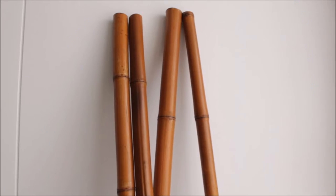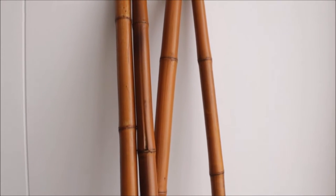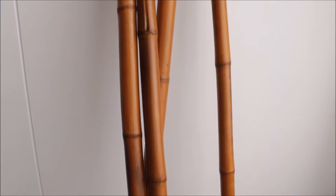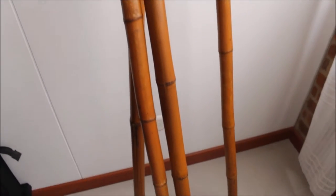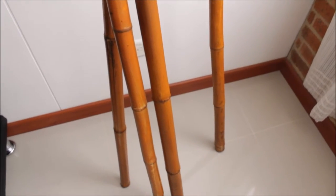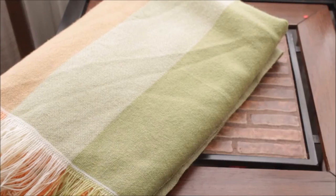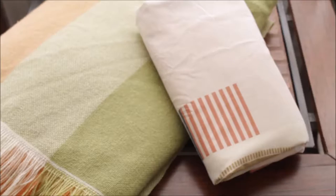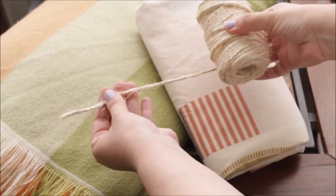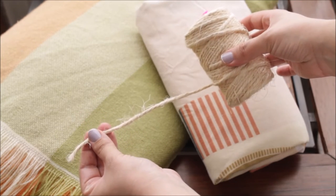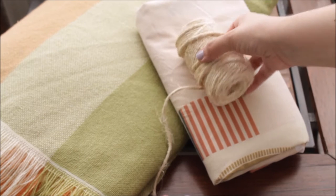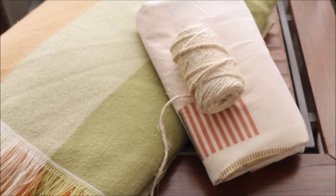Y bueno mis amores, los materiales que vamos a utilizar serán estos palitos de bambú que los conseguí en una finca a la cual voy seguido. Conseguí estos cuatro palitos o también los pueden comprar, si no tienen de estos pueden utilizar palos de escoba. Voy a utilizar esta mantita vieja, una sábana que ya no utilizo. Y compré este fique o cabulla o pueden utilizar lana o cualquier otro hilo que les sirva para atar y para decorar también.